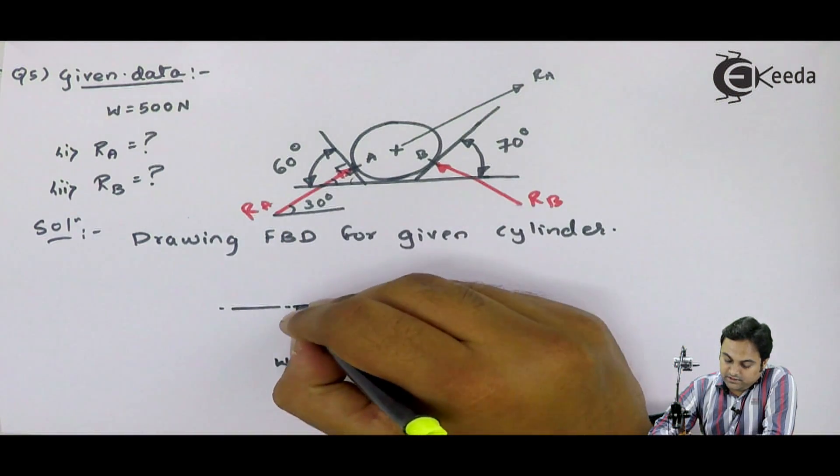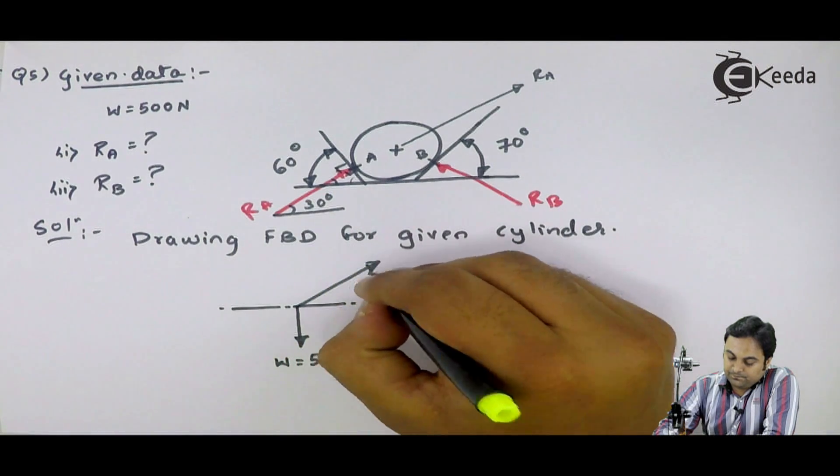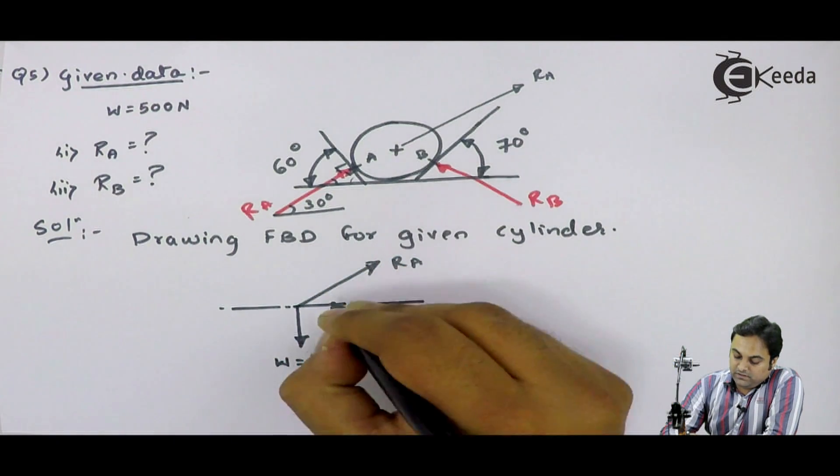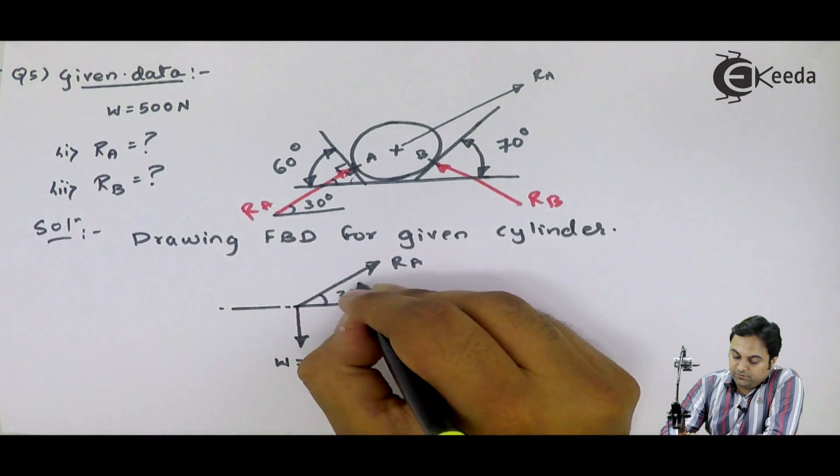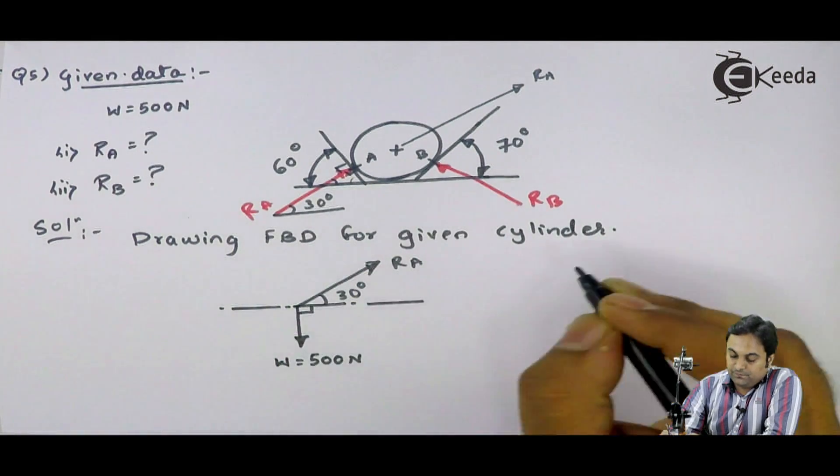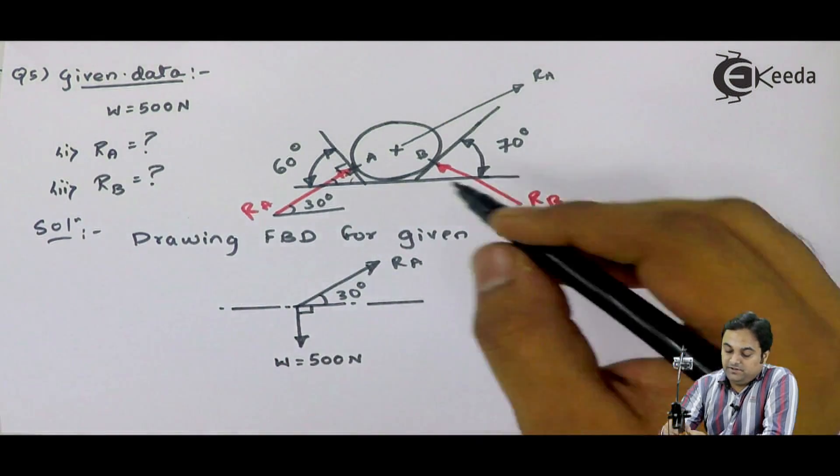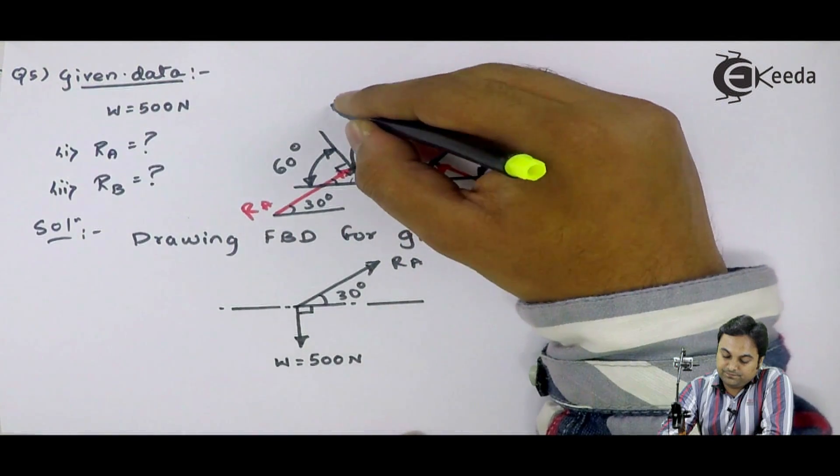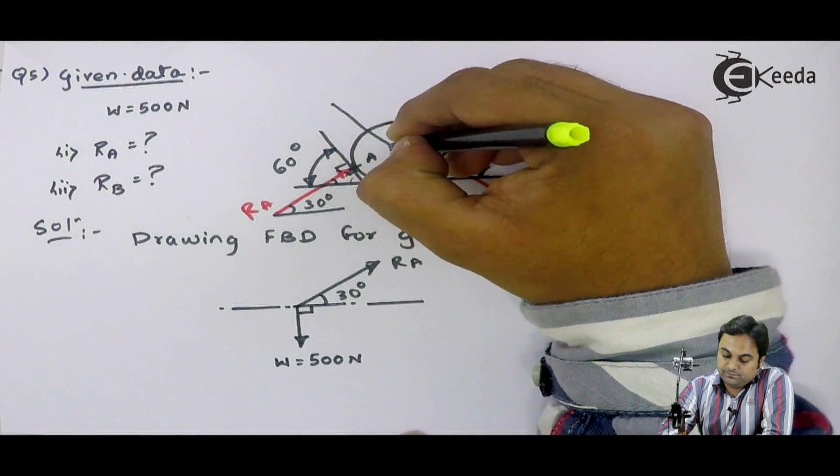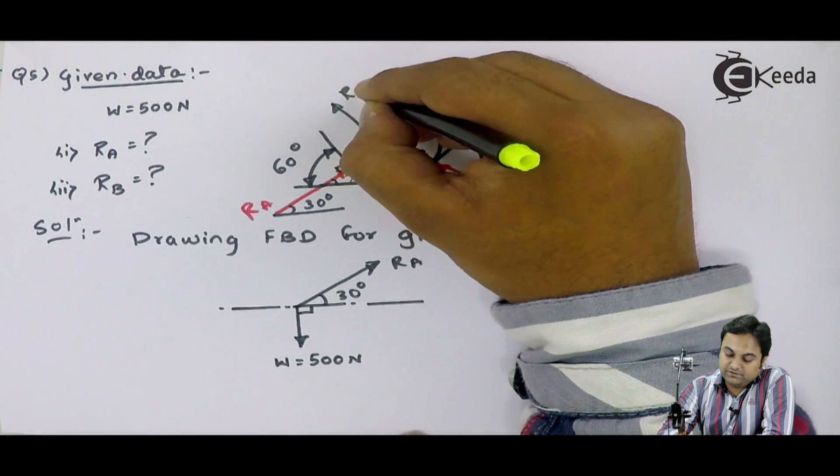I will mark RA inclined at 30 degree to the horizontal. Then RB, if I extend this, that is RB.